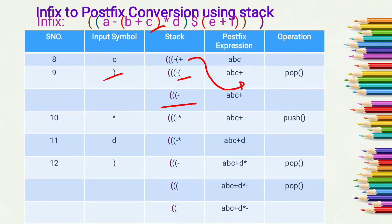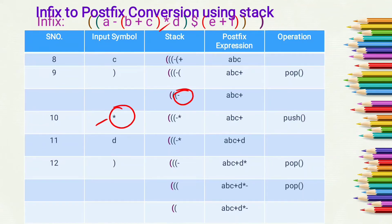The open bracket is then cancelled out by the closing bracket. The elements remaining in the stack are three open brackets and minus. Now the next input symbol is multiplication. As multiplication has higher precedence than the topmost operator which is minus, we push multiplication over minus and perform a push operation.